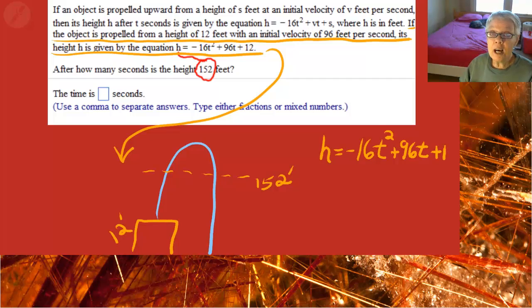And we want to find when the projectile will be 152 feet above the ground. That's height. So we put in 152 for h, and that's going to equal negative 16t square plus 96t plus 12.